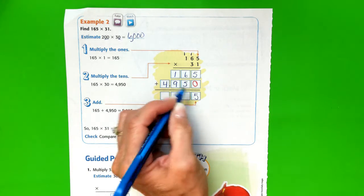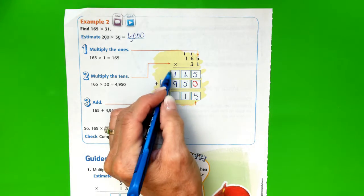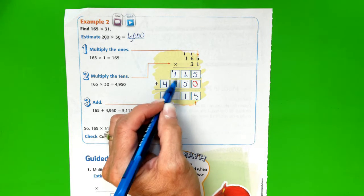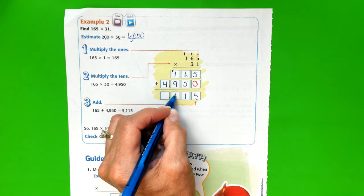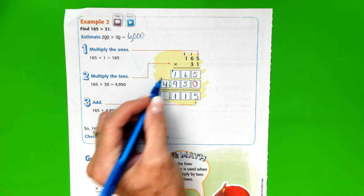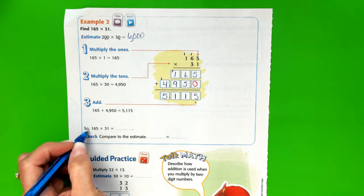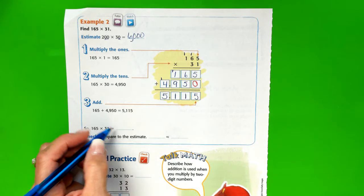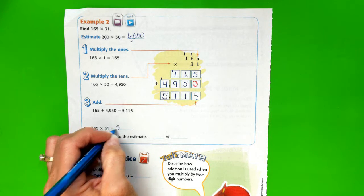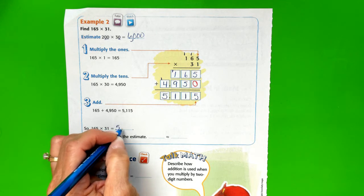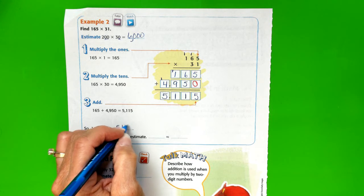5 plus 0 is 5. 6 and 5 is 11. Let's regroup. 9, 10, 11. We regroup again. And 4 plus 1 is 5. So 165 times 31 is 5,115.